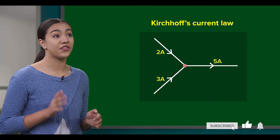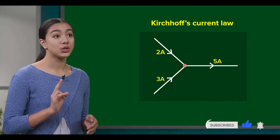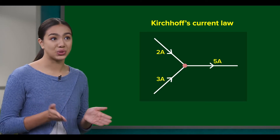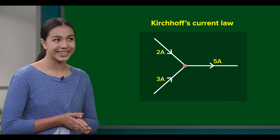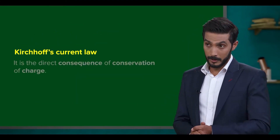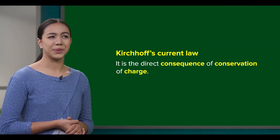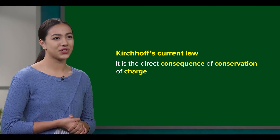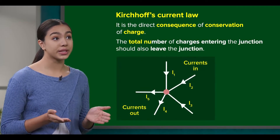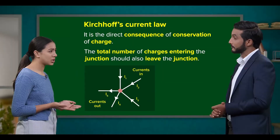This law explains why we get a current of 5 amperes when two wires carrying currents of 2 and 3 amperes respectively are joined together. Kirchhoff's current law is the direct consequence of conservation of charge, meaning the total number of charges entering the junction should also leave the junction.